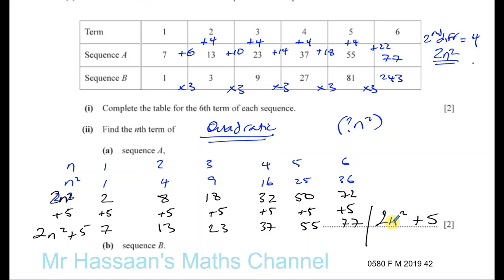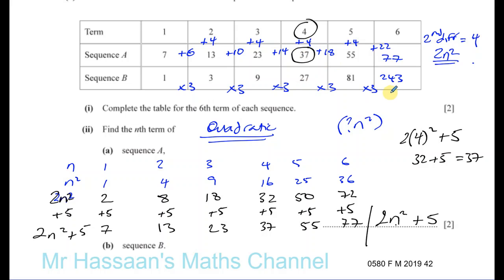So the answer is 2n squared plus 5. We can always check — for example, let's choose term 4. 2 times 4 squared plus 5: that's 2 times 16, which is 32, plus 5 gives you 37. And yes, the fourth term is 37 in sequence A. How did I know there was a 2 there? Because the second difference was 4 — it's always half of that second difference. So if the second difference is 2, it would be 1n squared; if 10, it would be 5n squared; if 1, it would be half n squared.